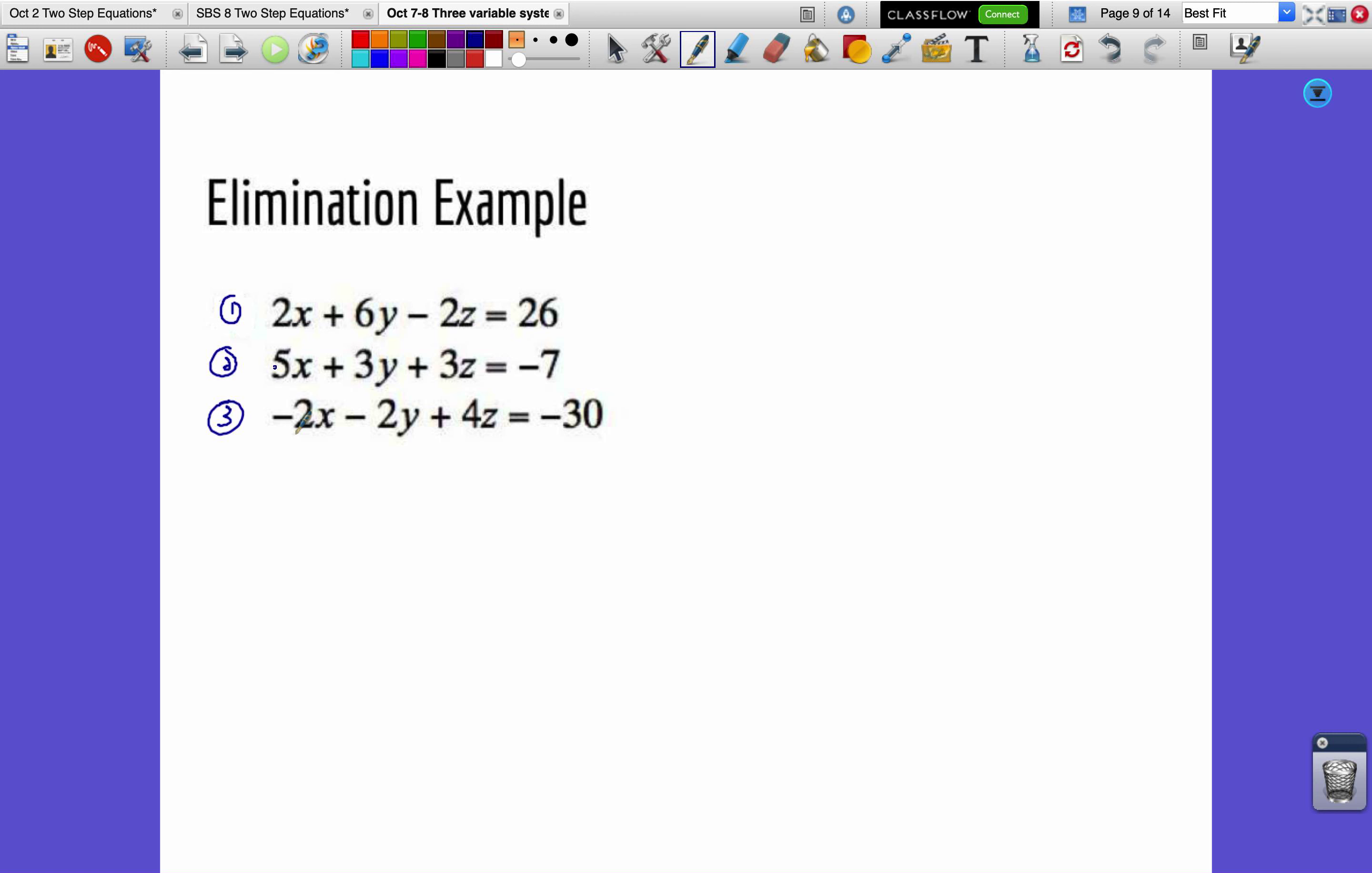All right. Now I've got to look to see which variable would be the easiest to eliminate. You know, five is not a multiple of two, so it'd be difficult to do x. Y is a pretty good candidate because six is a multiple of both three and two. So I can eliminate the y's pretty easily. And z is probably a little bit less optimal because four isn't a multiple of three. So I'd have to multiply both equations there. So what I'm going to do is I'm going to eliminate y's.